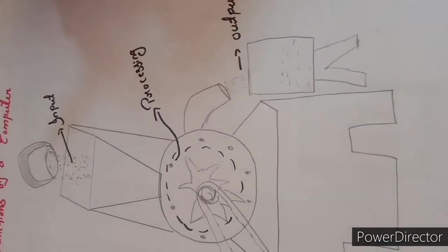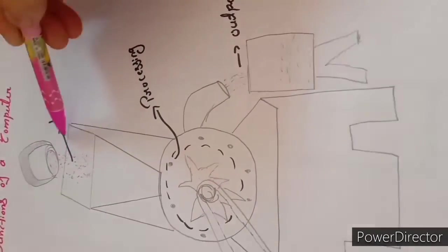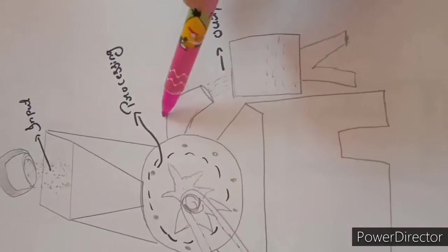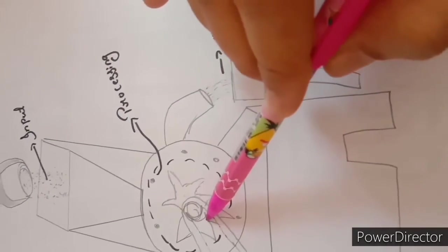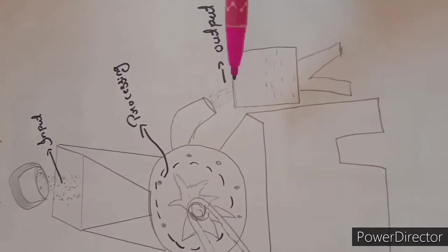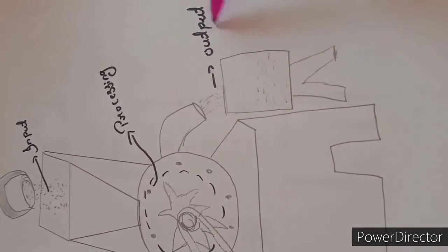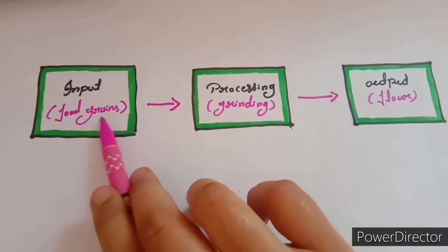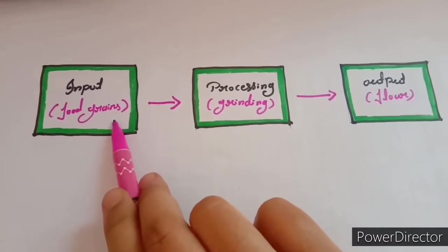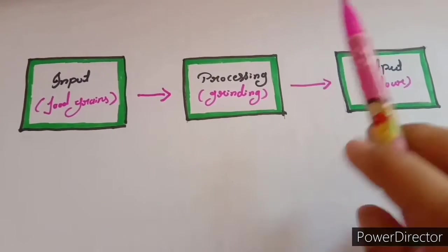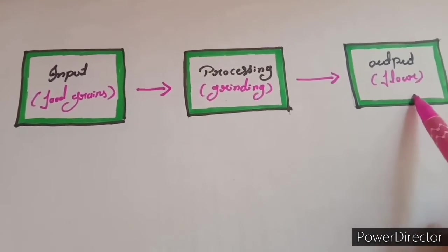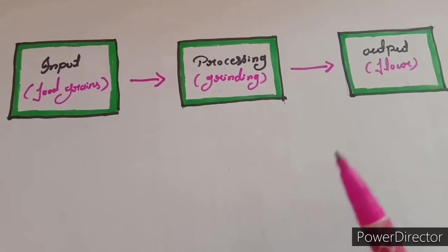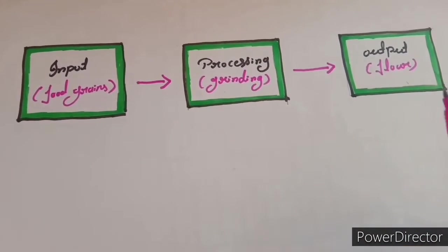So Food grains are put into the big funnel. This function is input. Slowly the grains are crushed. This processing is processing. The flour comes out of the opening at the bottom. This process is output. In this entire procedure, Food grains put into the funnel was input, Food grains Grinding was Processing, And output was Flour.